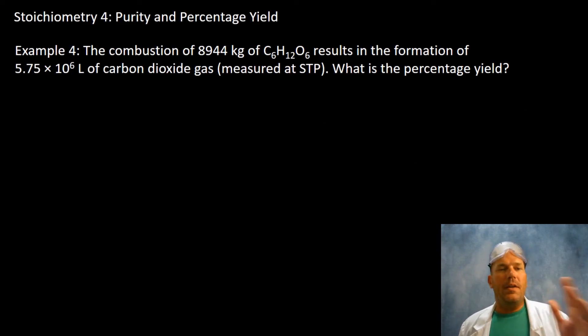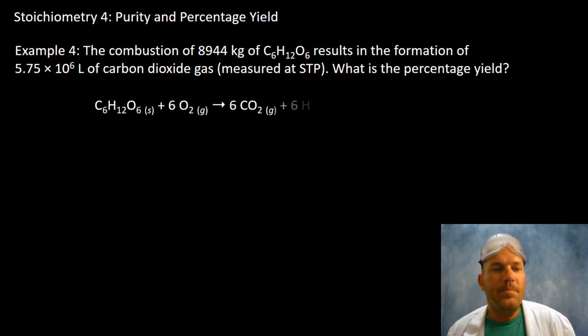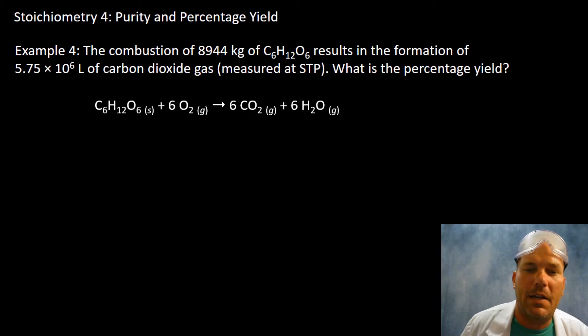Last example here. The combustion of 8,944 kilograms of glucose results in the formation of 5.75 times 10^6 liters of carbon dioxide gas measured at STP. What is the percentage yield? So I would love for you to go ahead and attempt this entire problem on your own to see if you can get it correct.